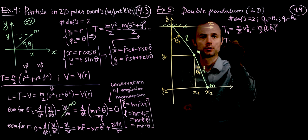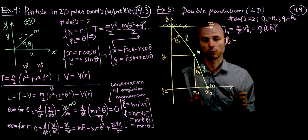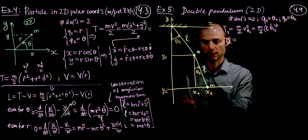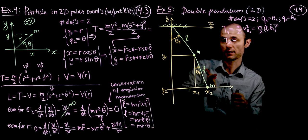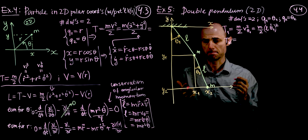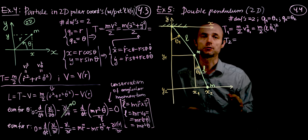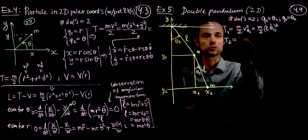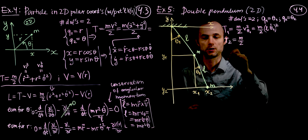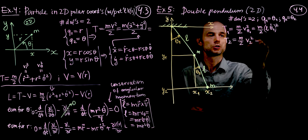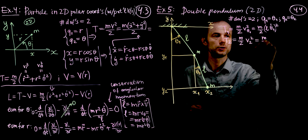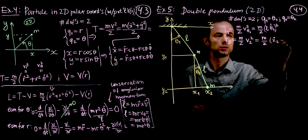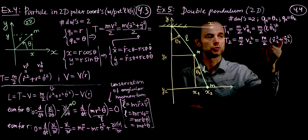The kinetic energy T2 of the second mass is more complicated, because its motion combines the motion of the first mass with the second arm's angle measured from the first. Let's switch to Cartesian coordinates. T2 = m/2 · v2² = m/2 · (ẋ2² + ẏ2²). We need to express x2 and y2: x2 = L sinθ1 + L sinθ2, and y2 = -L cosθ1 - L cosθ2, using s for sine and c for cosine as shorthand.